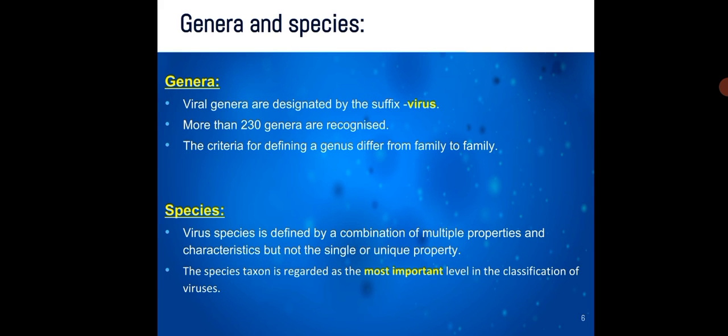Genera and species: Viral genera are designated by the suffix -virus, and more than 230 genera are recognized. The criteria for defining a genus differ from family to family. A virus species is defined by a combination of multiple properties and characteristics, but not by a single or unique property alone. The species taxon is regarded as the most important level in the classification of viruses.